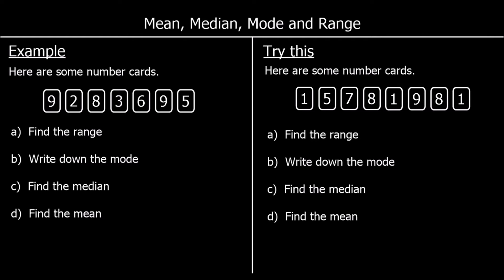And averages. We've got the mean, the median, the mode and the range. The mean, the median and the mode are three different types of averages. The range is a measure of how spread out the data is. So we've got some number cards — seven different cards. We need to find the range. The range is the biggest take away the smallest. The biggest number is 9, the smallest is 2. So the range is 9 take away 2, which is 7.